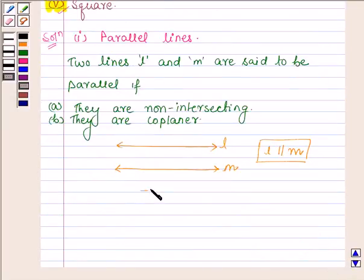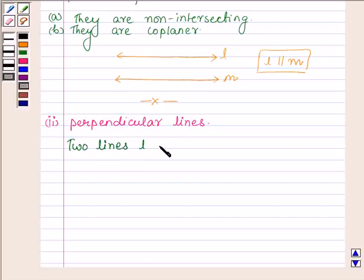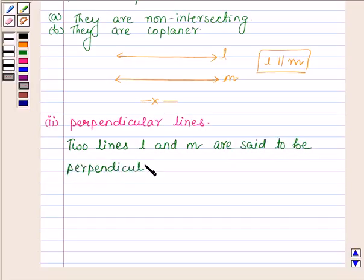So this completes the first part, and now let us define perpendicular lines. Two lines L and M are said to be perpendicular if